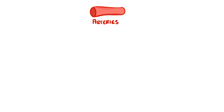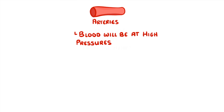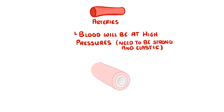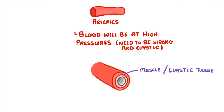As arteries carry blood directly from the heart, the blood inside them is going to be at really high pressures, because it's just been pumped out of the ventricles. In order to bear these high pressures, the arteries need to be both strong and elastic. To achieve this, they have a thick layer of muscle tissue to keep them strong, and a thick layer of elastic tissue so that they can stretch and recoil.